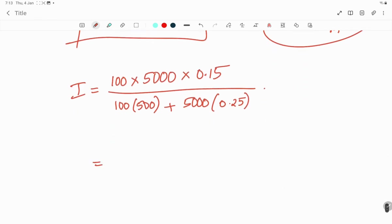So we have 100 × 5000 × 0.15 divided by 50,000 plus 5000 × 0.25.